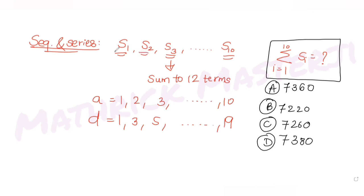There are many ways to solve this question. You can find the sum of all 10 APs individually and then add them, but that would be very time-consuming. So let's try to find a pattern — the first terms increase by 1 each time, and the common differences increase by 2 each time.